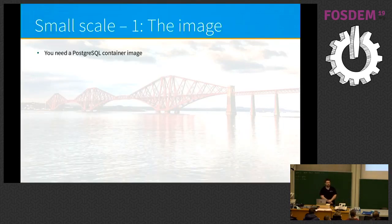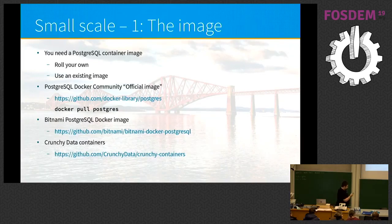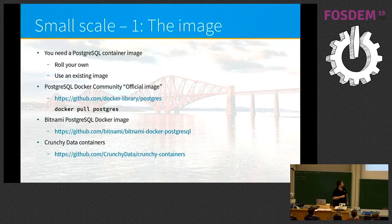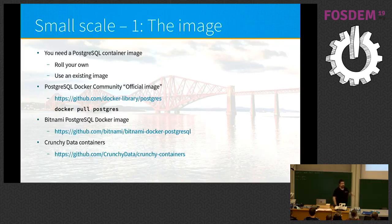Let's look at deploying Postgres at small scale in Kubernetes. The first thing you need is an image — you can build your own or use an existing one. The official image is the Docker community image maintained in Docker library, which you get when you run 'docker pull postgres'. Then there's the Bitnami Docker image, which has a few interesting twists — for example, it doesn't have root access to the container. And Crunchy Data also provides containers. There are many different container images you can find very easily on GitHub.